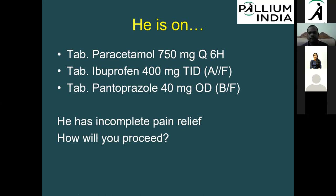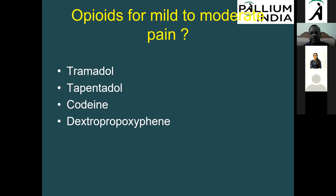Since this patient has mild to moderate pain and unsatisfactory relief on paracetamol and NSAIDs, we move to Step 2 — opioids for mild to moderate pain. The opioids available in India for this step are tramadol, tapentadol, codeine, and dextropropoxyphene.